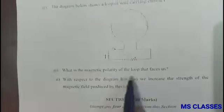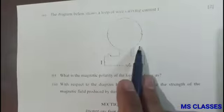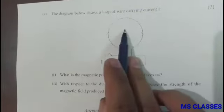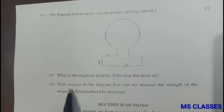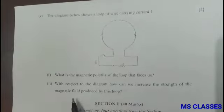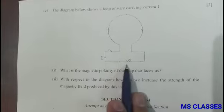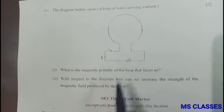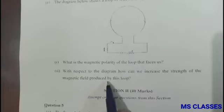Part (g): The figure below shows a loop of wire carrying current I. What is the magnetic polarity of the loop that faces us? The current is moving in clockwise direction, so this face will be south. With respect to the diagram, how can we increase the strength of the magnetic field? By increasing the strength of current. Because of the rheostat, we can increase the strength of current and hence increase the strength of magnetic field.